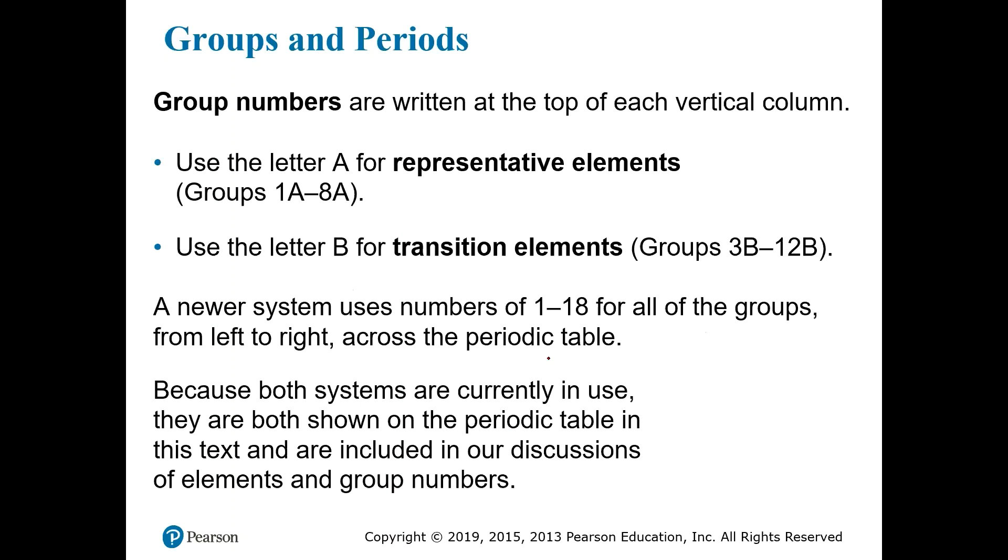The group numbers are written at the top of each vertical column and they use the letter A for the representative elements and the letter B for the transition elements. There is a newer system that does away with the A and the B designations and just numbers the columns from left to right 1 through 18. Both systems are currently in use so most periodic tables that you find will include both group numbers. So it's important to be able to work with both.